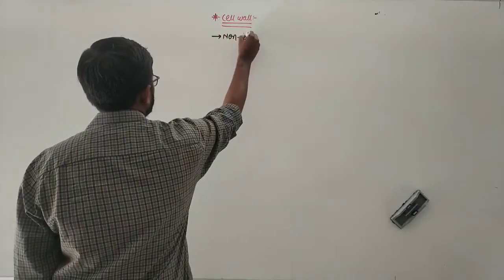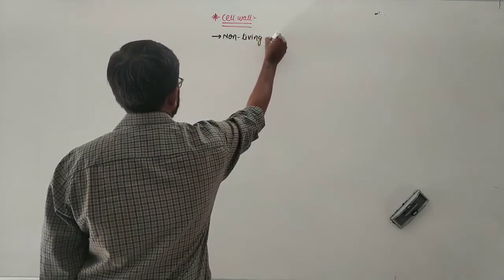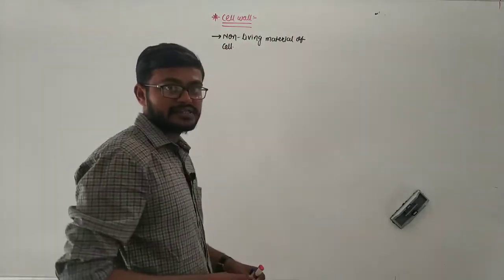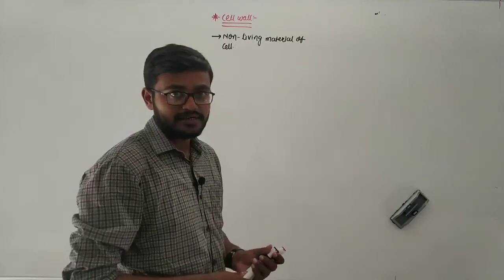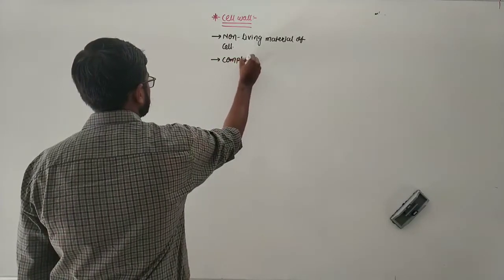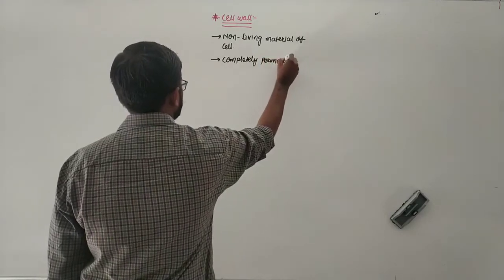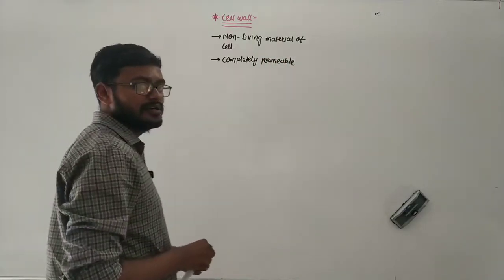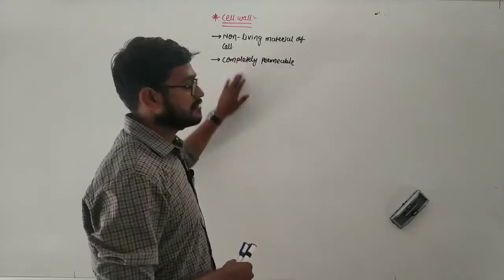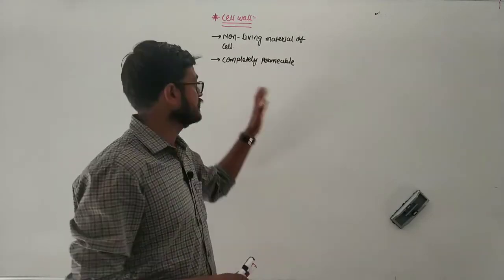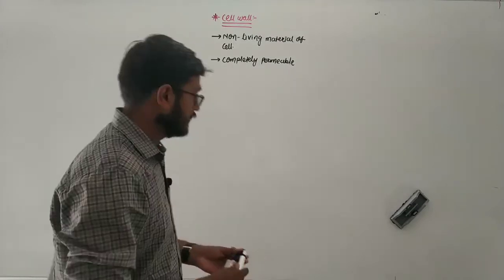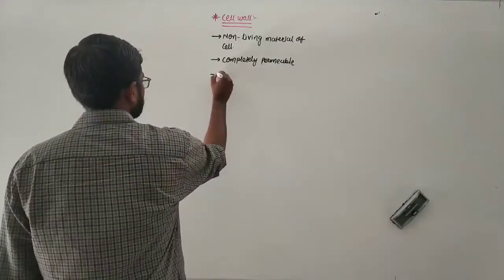The cell wall is a non-living material of the cell. It does not have a living component like the plasma membrane. The cell wall is completely permeable — it allows all substances to move inside and all substances to move outside. So it is not like a cell membrane; it is not semi-permeable. It is completely permeable.